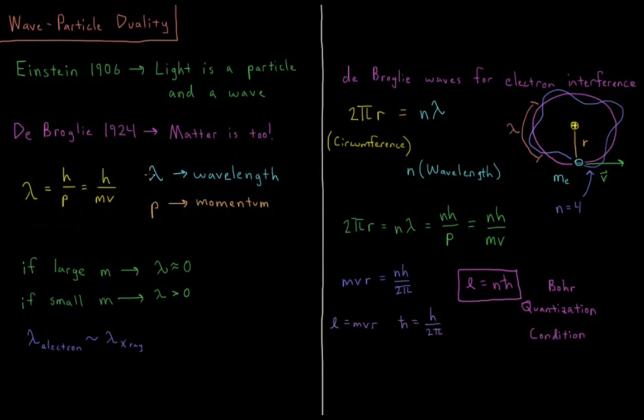We need to define what this wavelength would be. The wavelength lambda would be equal to, under the de Broglie hypothesis, Planck's constant divided by the momentum of the particle, which would be Planck's constant divided by mass times velocity, h over mv, for things that have a finite rest mass.